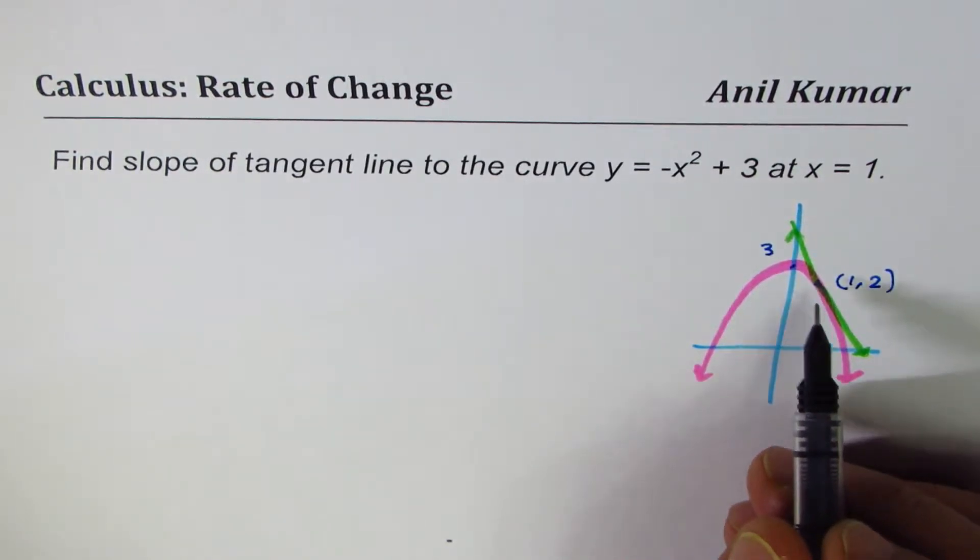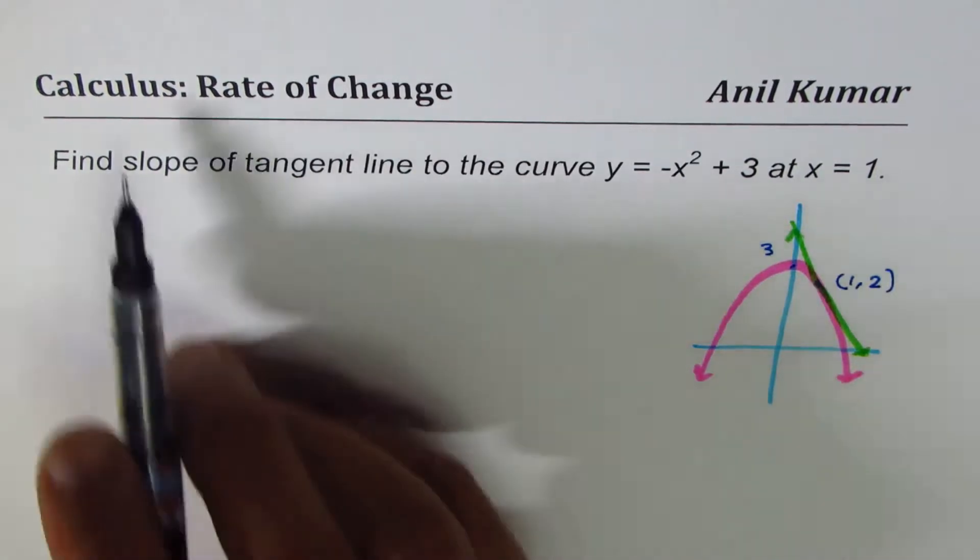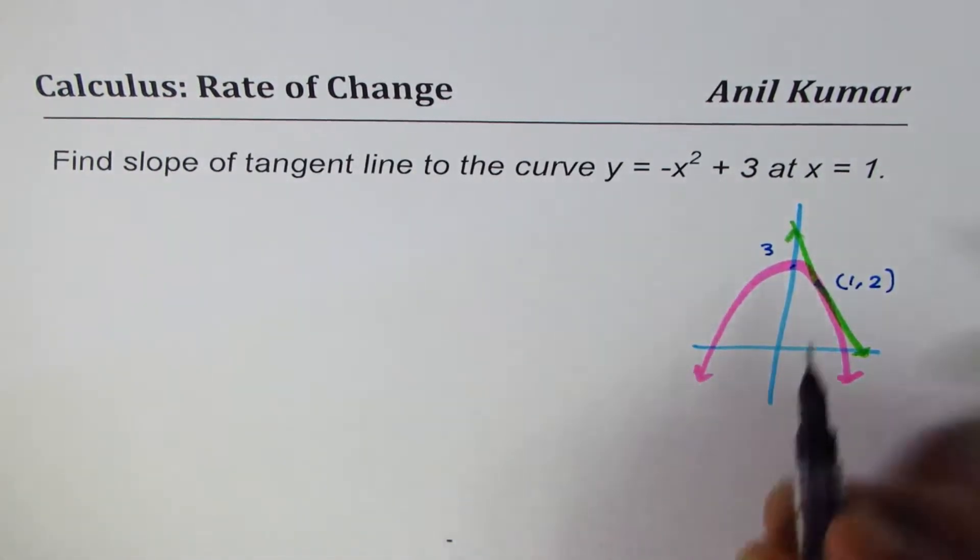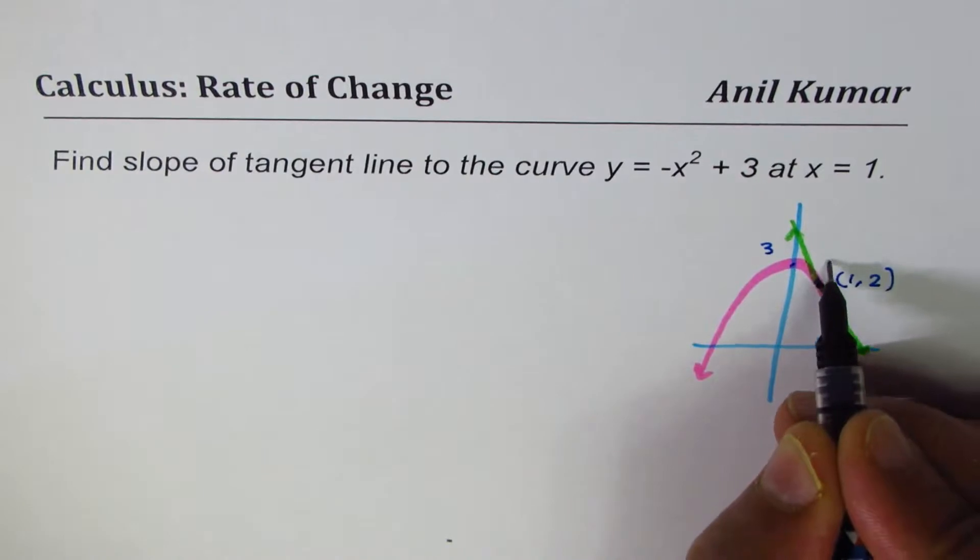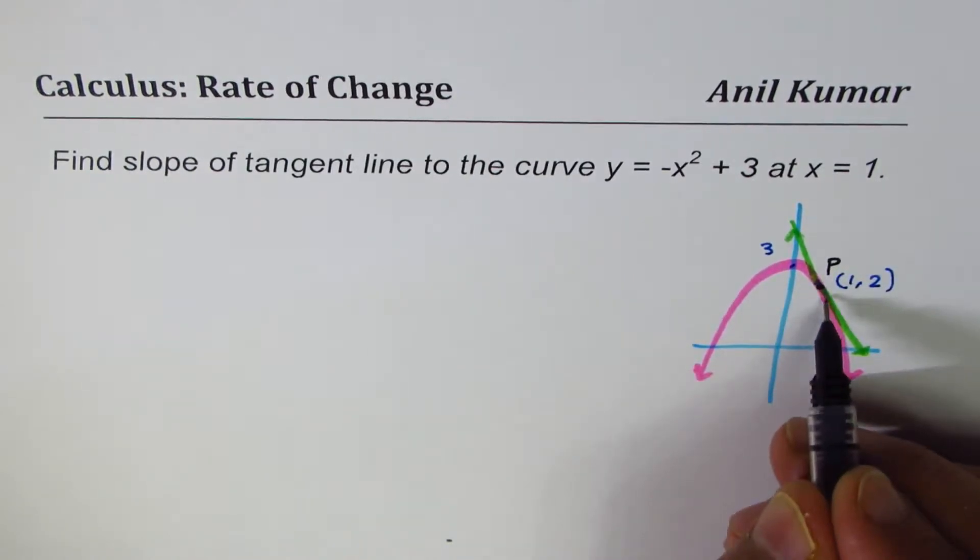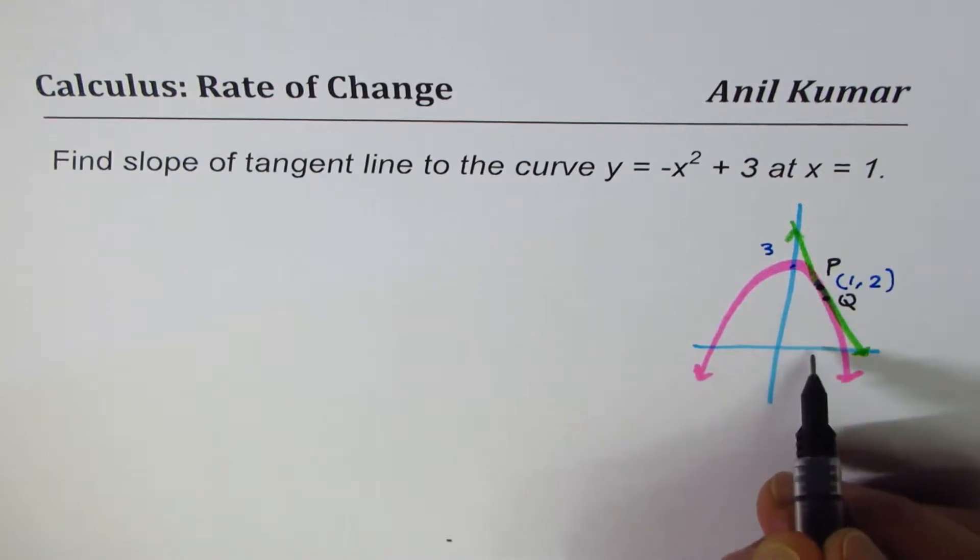So what we will do here, we can use the concept of limits, those who have done it. Basically, we are taking this point P and we are taking another point Q which is very close to P. The secant becomes a tangent when the x value between P and Q is approaching 0.